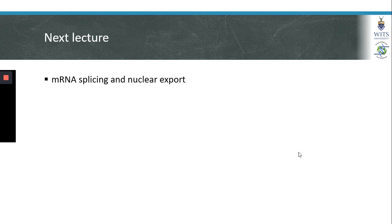This brings us to the end of our lecture on 5' capping and poly-A tailing. In the next lecture we will discuss the concept of mRNA splicing and export of these mRNAs into the cytoplasm for protein translation.